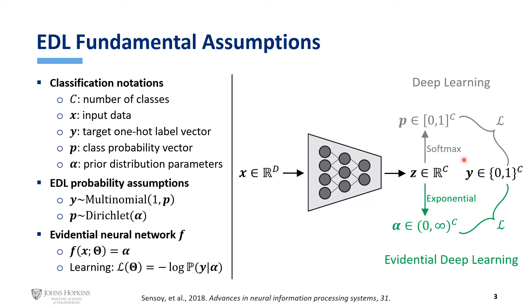Traditional deep learning uses softmax to transform Z into a vector of probabilities, and the cross-entropy loss can be calculated from the prediction and the ground truth. Evidential deep learning uses a different activation function, such as the exponential function, and transforms Z into alpha, a vector of strictly positive numbers. The loss can be calculated from alpha and Y as the negative log likelihood.